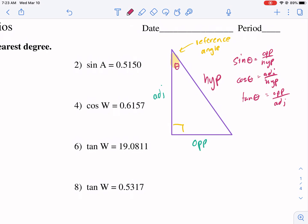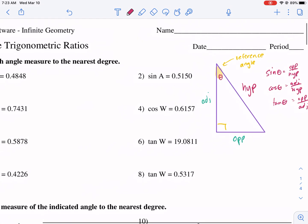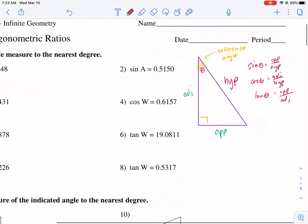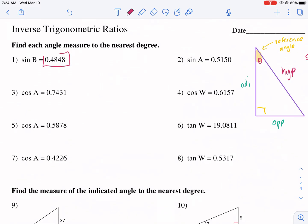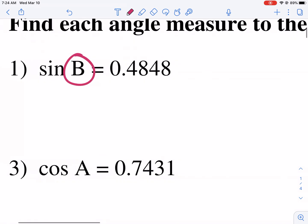Once you have your reference angle, you can label your opposite and adjacent sides. The hypotenuse will always stay the same. If we have an angle and our reference angle is theta, we know that sine of theta equals opposite over hypotenuse, cosine is adjacent over hypotenuse, and tangent is opposite over adjacent. So that's the basics of trigonometric functions.